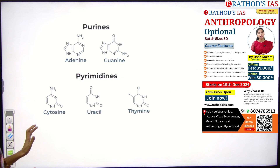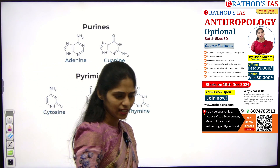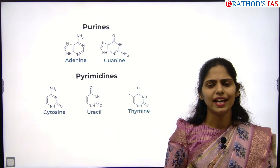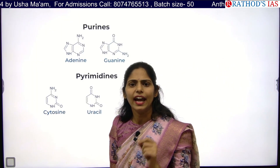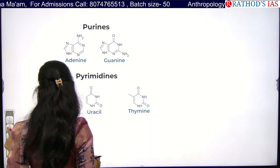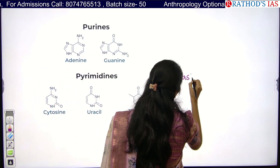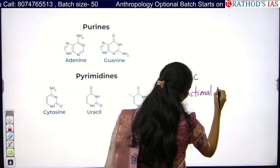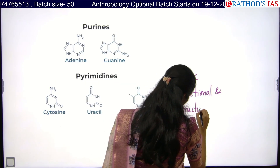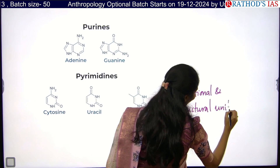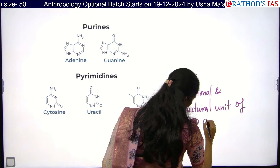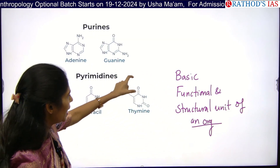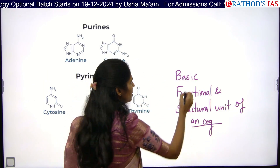I want to make this concept very easy. As you all know from your school days, you will have been hearing and writing this single line: cell is a basic structural and functional unit. You can take any organism — any animal, any insect, or any plant — the basic functional and structural unit is the cell.